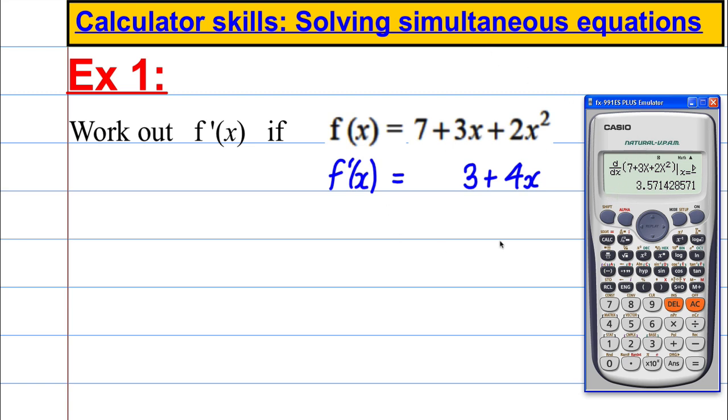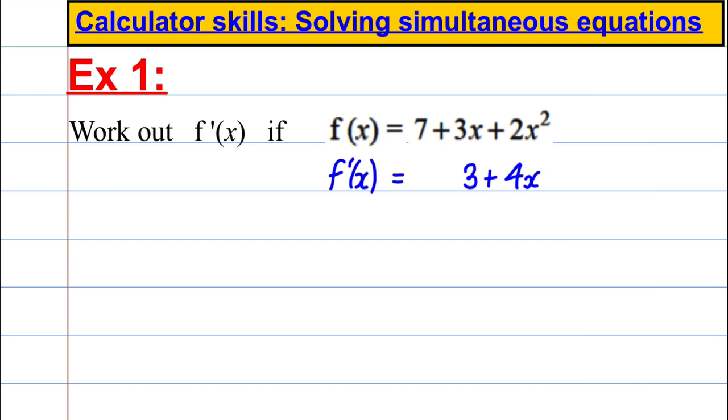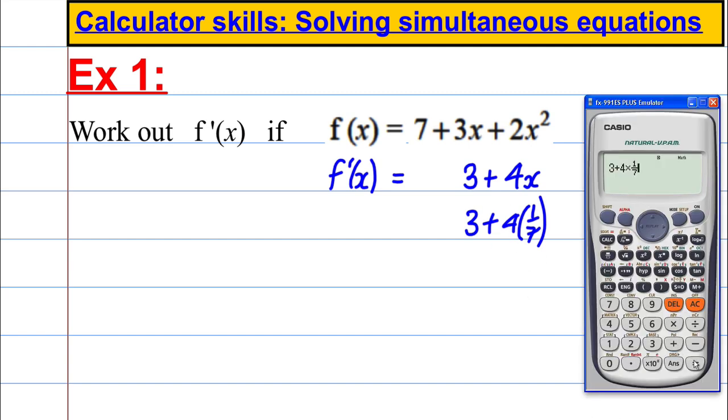So remember that. Now, in our answer that we worked out, if we were to put in f is, so 3 plus 4 times 1 7th, hopefully we should get, if we put a 7th in here, i.e. what we're doing here is working at 3 plus 4 times 1 7th. If we get the same answer as the calculator got, then we know our differential must be right. So let's press equals, and we get 3.5714, et cetera. So we know we've done this right.